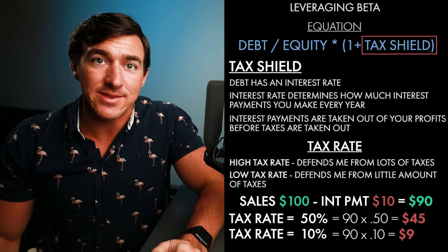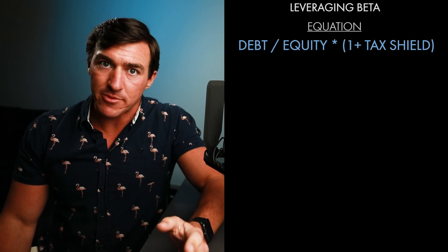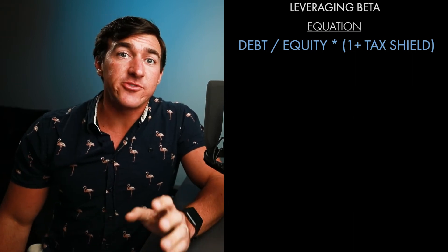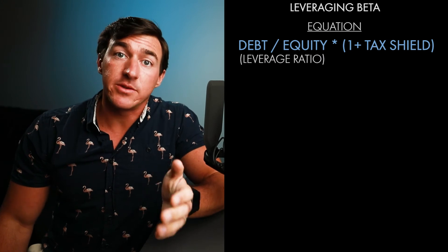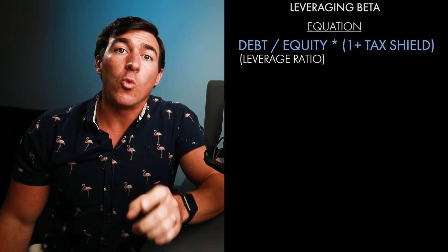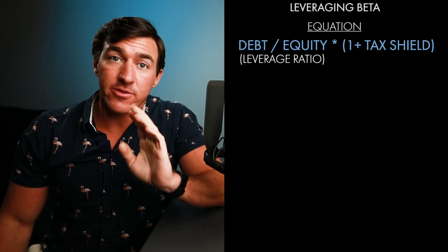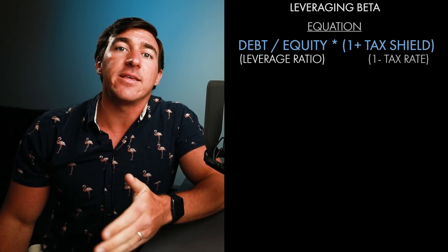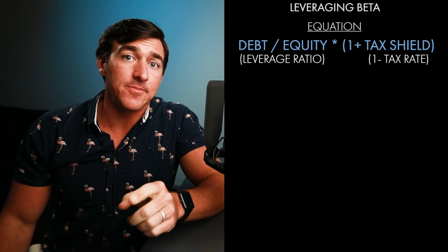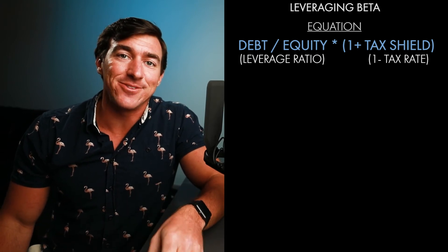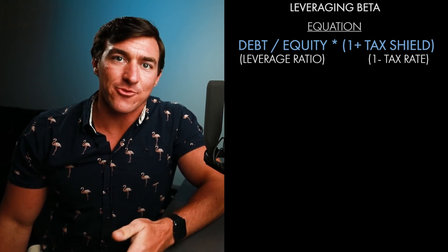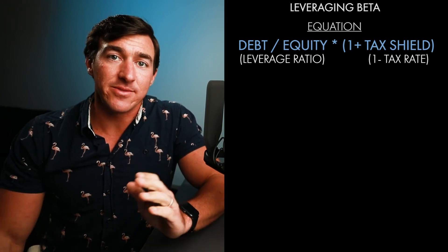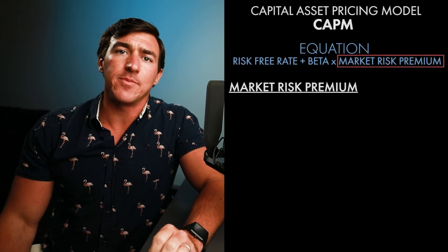That was a long way to get down to leveraging beta, but let's get into it right now. To leverage beta, the equation is pretty simple: all we have is our leverage ratio — debt to equity — times one plus our tax shield. And the tax shield is one minus our tax rate, because that's how much it's shielding us from. With that in mind, let's continue into what's called the market risk premium.